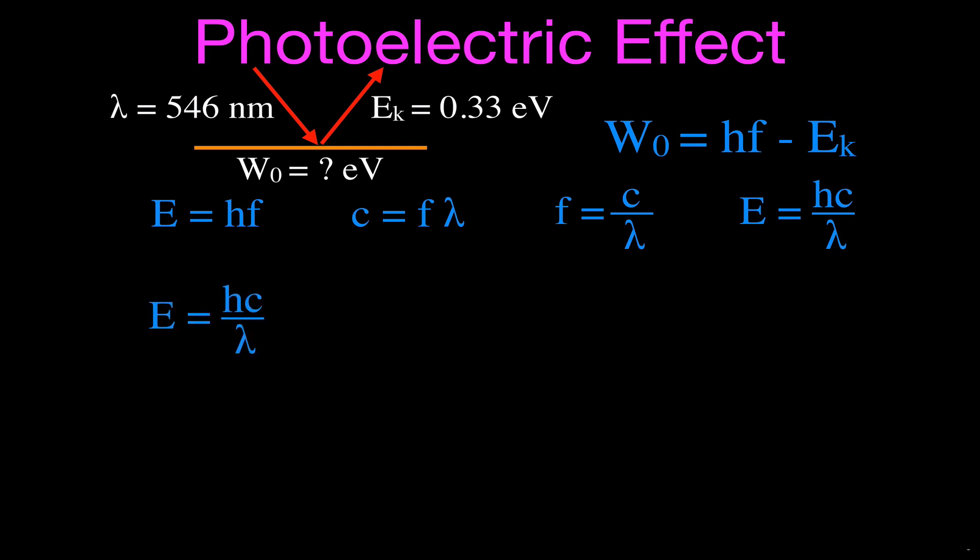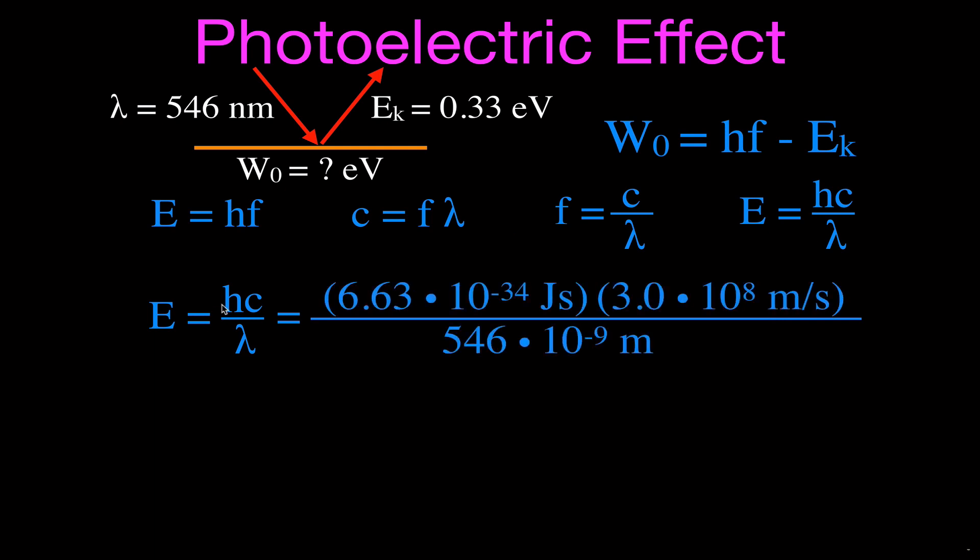Now, the wavelength has to be in meters, so you've got to convert to meters. I put down Planck's constant as 6.63 times 10 to the minus 34 joule seconds. The speed of light we approximate as 3 times 10 to the eighth meters per second, and this says 546 nanometers, so I have 546, and nano is 10 to the minus 9. There are a billion nanometers in a meter, so that converts that unit of nanometers into meters.